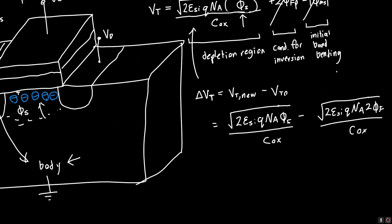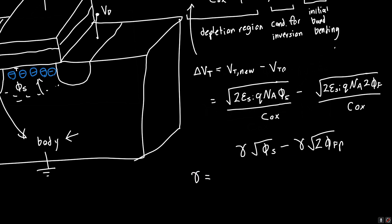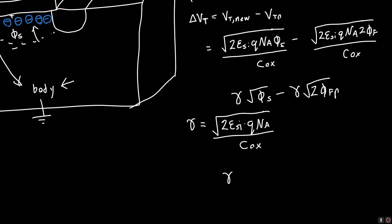This is kind of painful to look at, so I'm just going to lump all these constants out front. I'm going to write this as gamma times the square root of psi_S minus gamma times the square root of 2 phi_FP, where gamma is just 2 epsilon silicon times Q N_A all over C_ox. If we factor it, it's just gamma times the surface potential minus the initial surface potential without the source voltage.